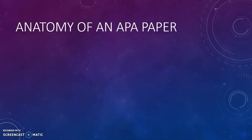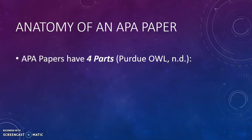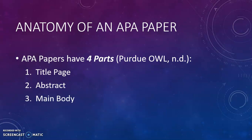All right, so what are the four parts of an APA paper? They are the title page, the abstract, the main body, and the references page. Let's take a look at each one of these in a little more detail, and I'll probably have videos in the future that will show you how to create each of these pages in more detail.